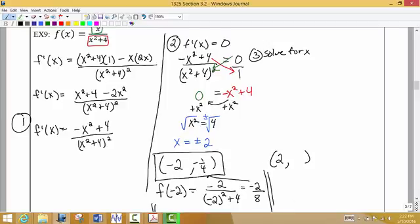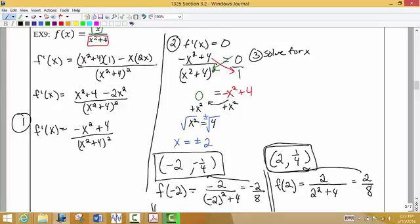Now let's do the same thing, but let's do it for positive 2. I'm going to put a positive 2 into the original graph to find the point on the original function. And this time I get 2 over positive 8. So positive 2 over positive 8, which gives me a reduction of 1 fourth. So we have two points on the graph that have horizontal tangent lines.